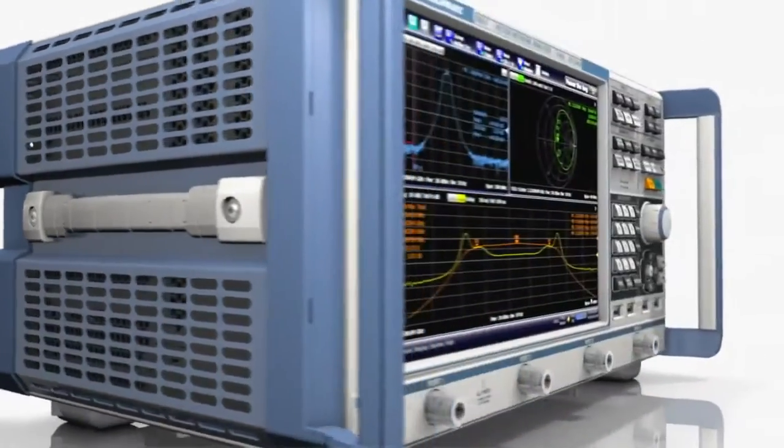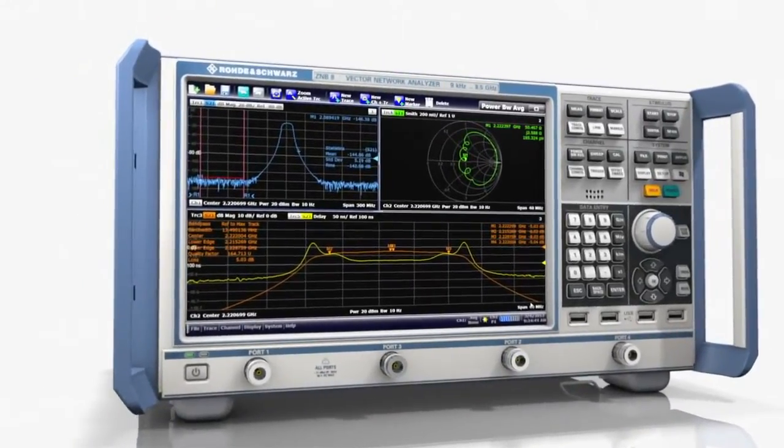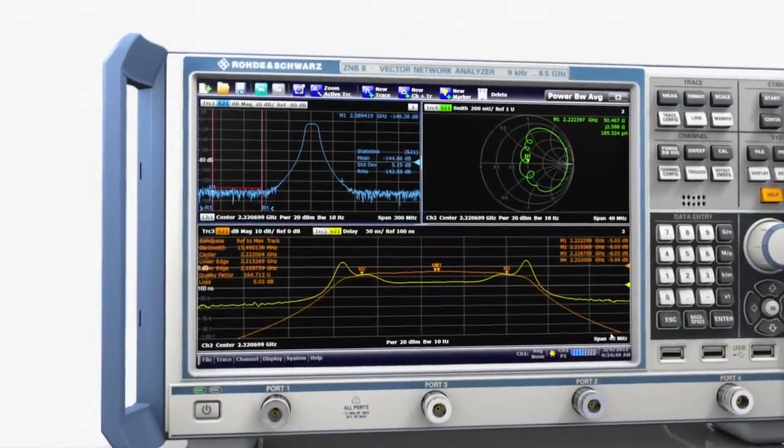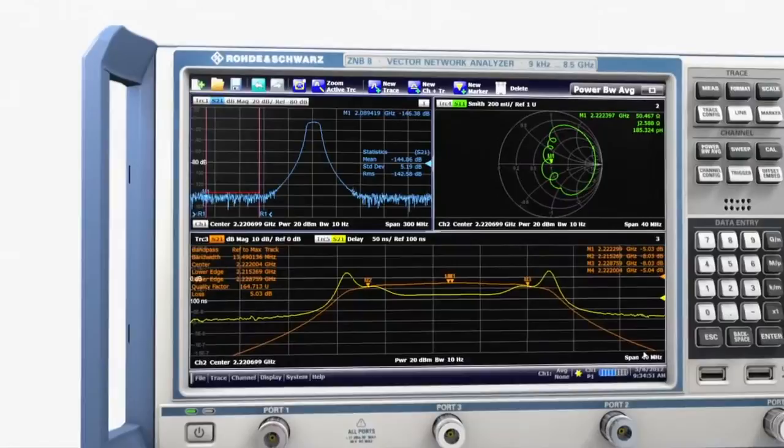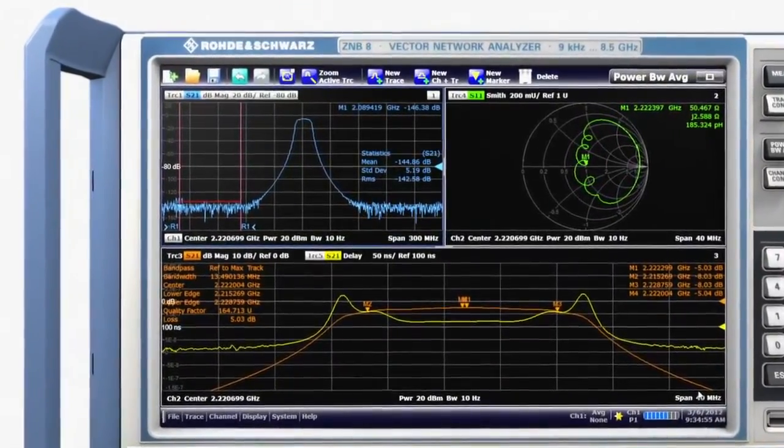The most striking feature about the ZNB, however, is its 12.1-inch touchscreen, taking up most of the analyzer's front side. This oversized touchscreen provides you with a complete overview of your measurements at any time and lets you keep track of all relevant details.